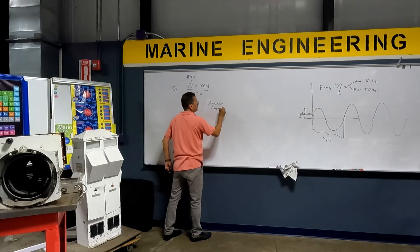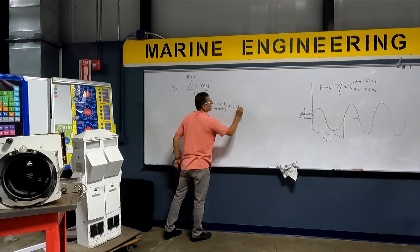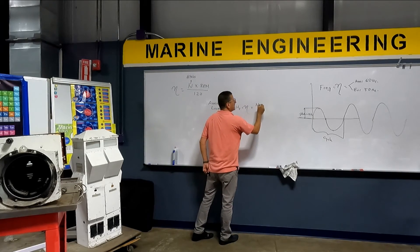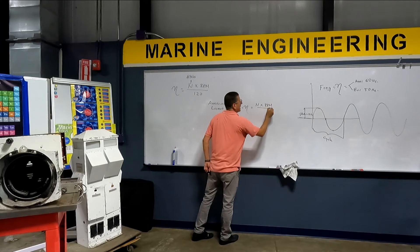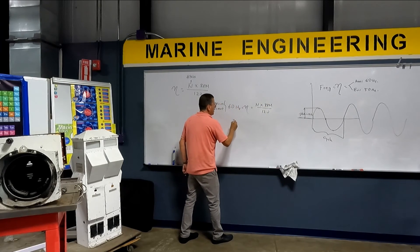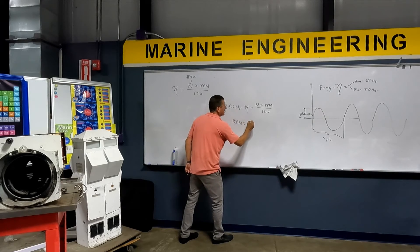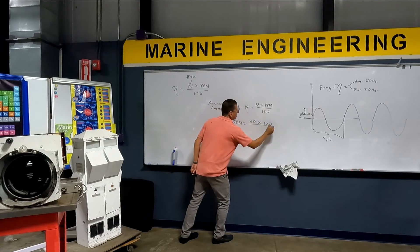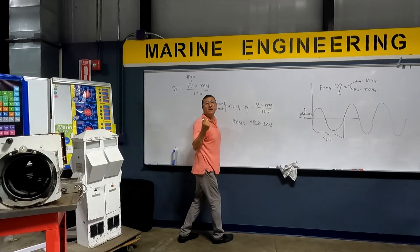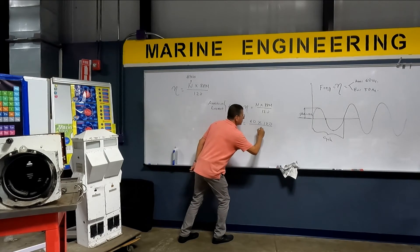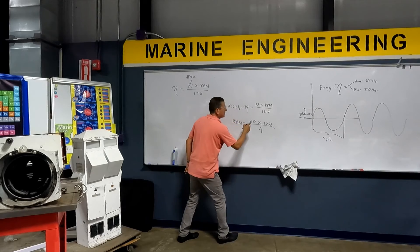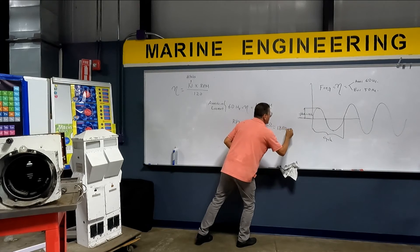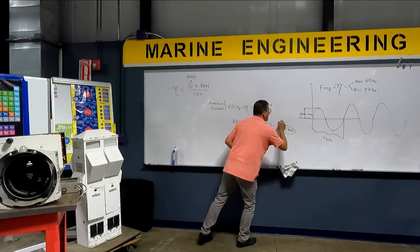American current is 60 hertz. The formula is: frequency = (number of poles × RPMs) / 120. To find RPMs: RPMs = (60 × 120) / number of poles. A typical generator has four poles. So: 60 times 120 divided by 4 equals 1800 RPMs. American generators run at 1800 RPMs. Don't forget — this is for American power.